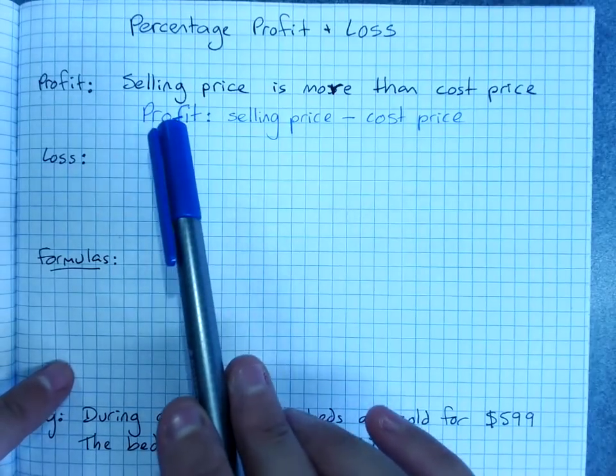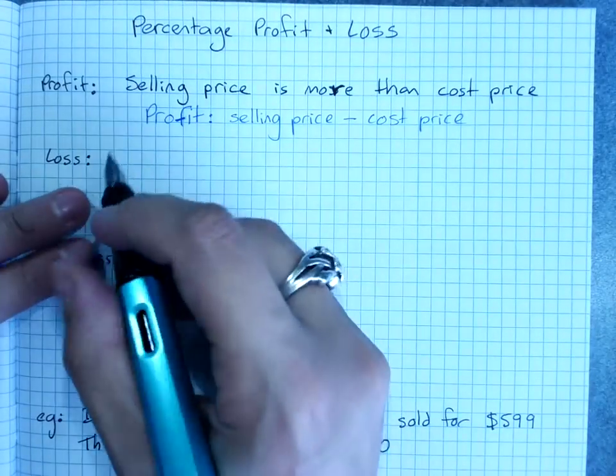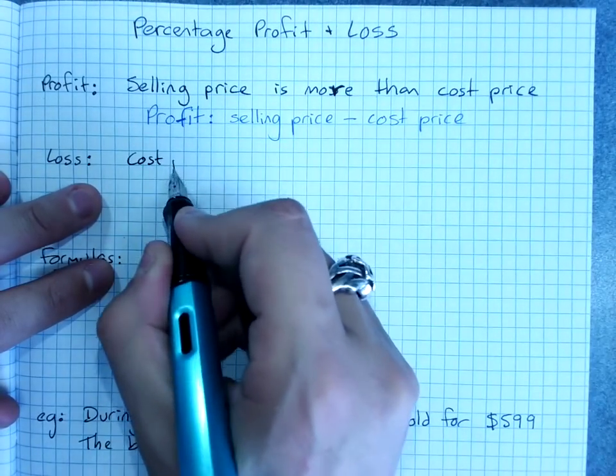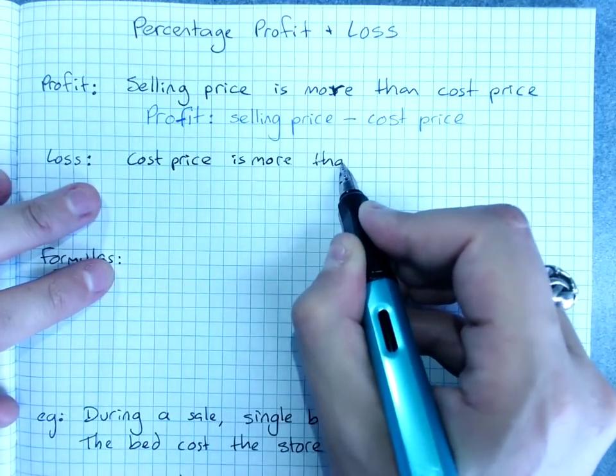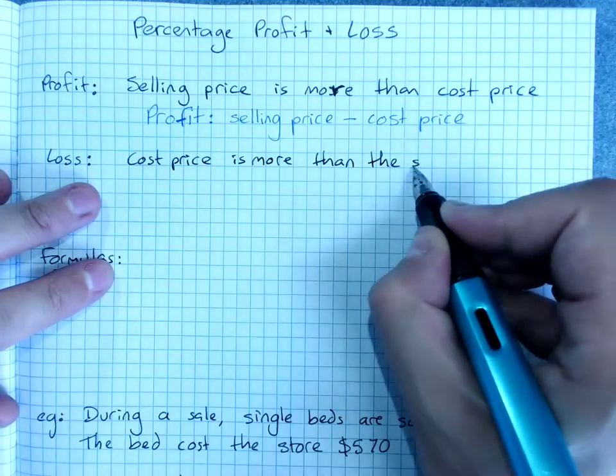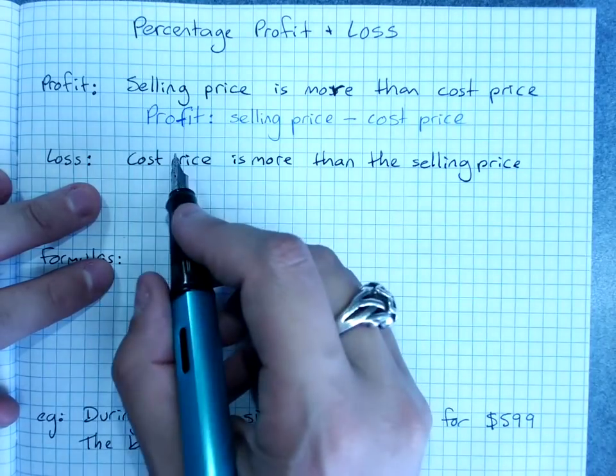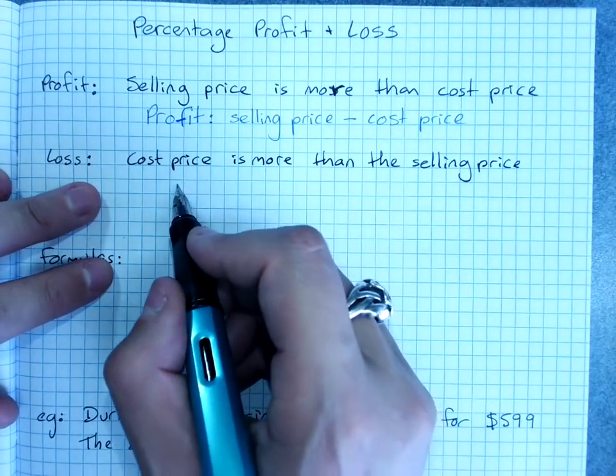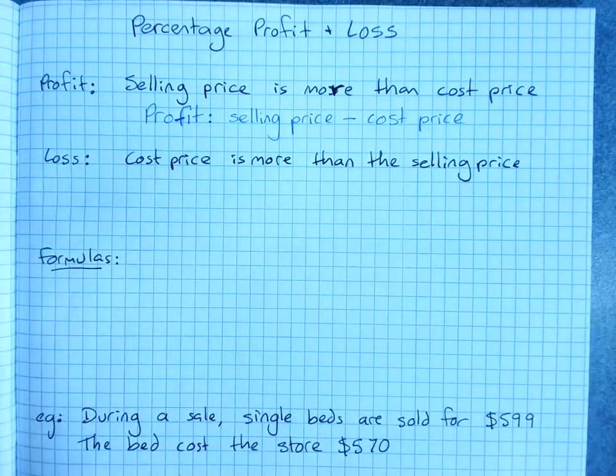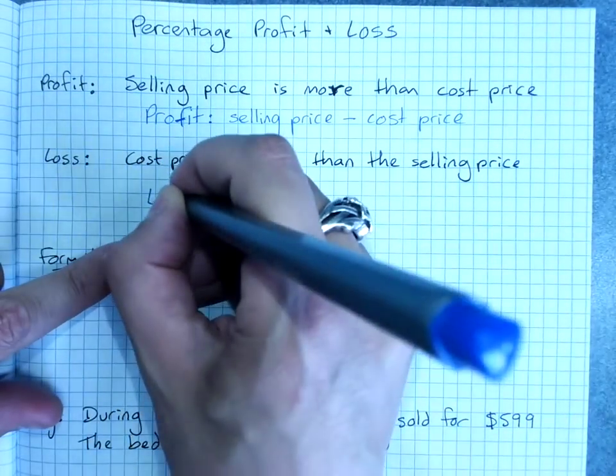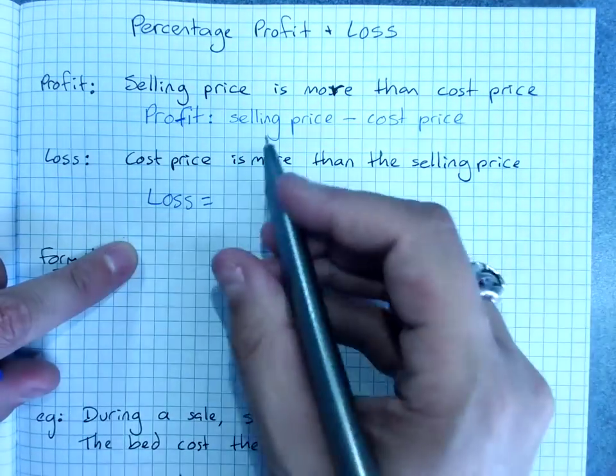And you would have to say then that this was the amount of profit you were finding. So very much in your working you would say the profit was the selling price minus the cost price. A loss happens when the cost price is more than the selling price. So if it cost you something like $100 to buy something and then you sold it for $80, you've made a $20 loss. And you calculate loss by doing the cost price minus the selling price.